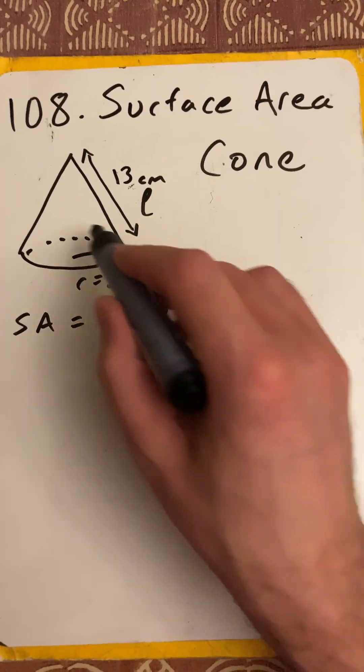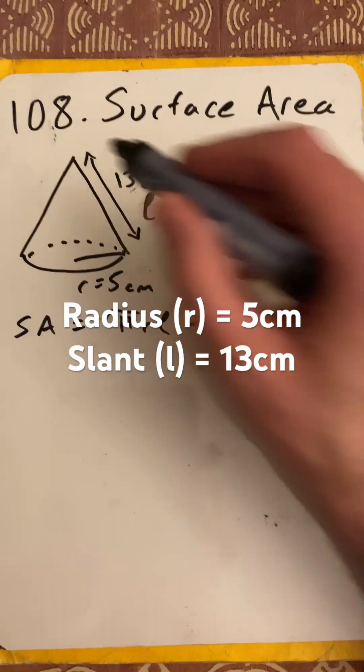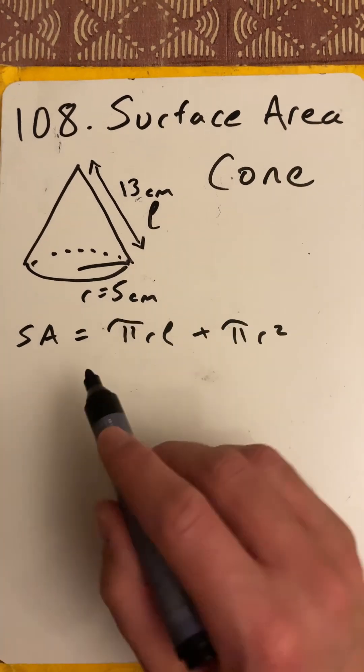So if we have a radius of 5 for the circle at the bottom and a slant of 13 centimeters, we're going to work out the surface area.